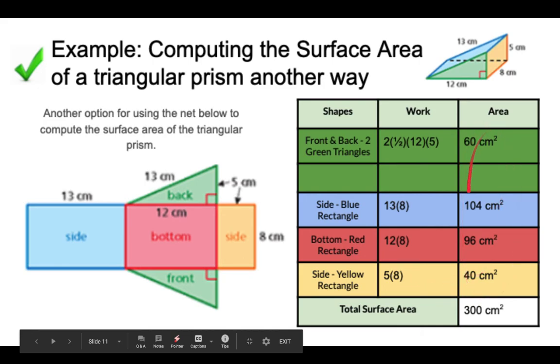Then you have to make sure you add all of them up and get 300 centimeters squared for the total surface area of the whole triangular prism.